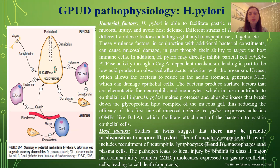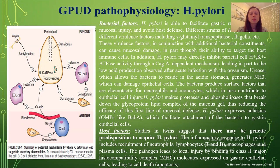H. pylori expresses adhesins which facilitate attachment to gastric epithelial cells. Host factor studies in twins suggest a genetic predisposition to H. pylori infection. The inflammatory response includes recruitment of neutrophils, lymphocytes, TNF, macrophages, and plasma cells. The pathogen leads to focal injury by binding to class II major histocompatibility complex MHC molecules expressed on gastric epithelial cells, leading to cell apoptosis.